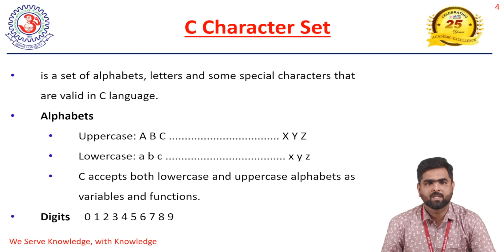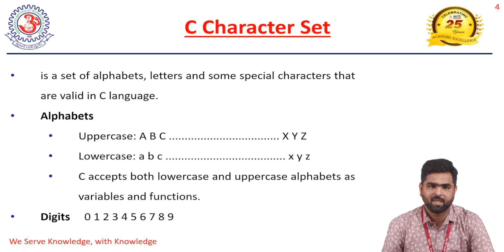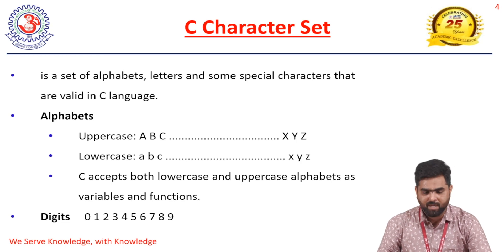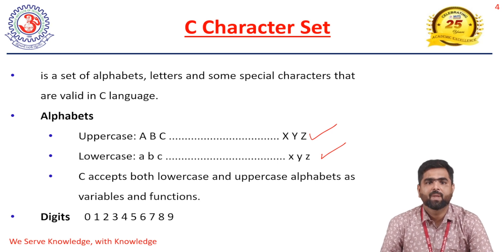Now we will discuss the C character set. The C character set refers to the different alphabets, letters, and symbols we use while writing a C program. All alphabets and special characters used must be valid for the C language. When it comes to alphabets, we can use uppercase A to Z as well as lowercase a to z. C language accepts both uppercase and lowercase as variable names and function names.